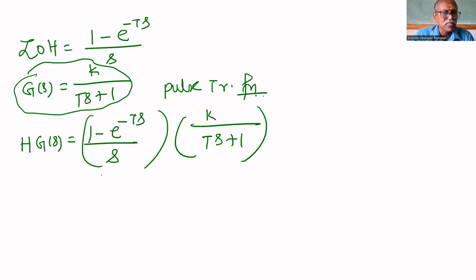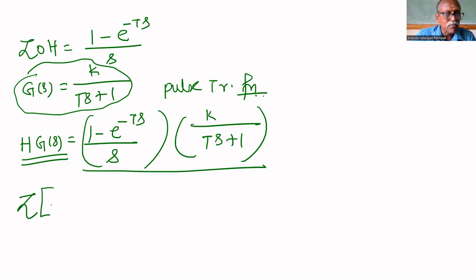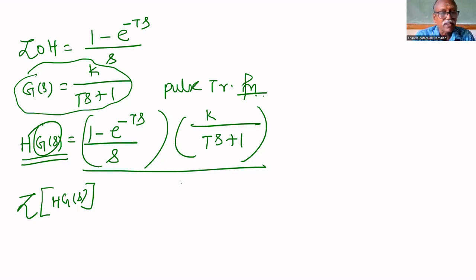You know how to find this — we already used this in finding the Kalman's controller, deadbeat controller, and Dahlen's controller. But the name for this is pulse transfer function. The pulse transfer function is the Z transform of H·G(S). In the examination, they will give only G(S), but you have to multiply yourself by H, then find the transfer function. That is called the pulse transfer function.